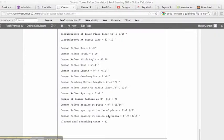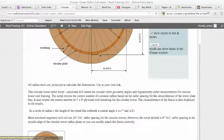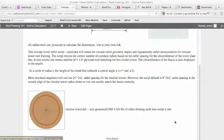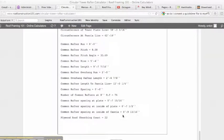Common rafter spacing at the inside of the plate is 7 and a half. That's telling us where the inside of the plate is. And common rafter spacing at the inside of the fascia.